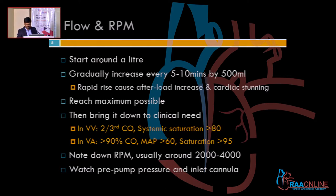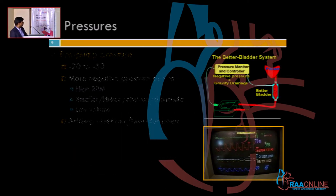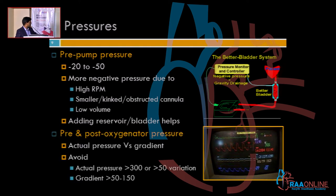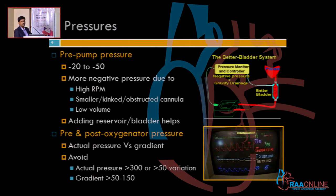Go gradually. Regarding pressures: you monitor pre-pump pressure, post-oxygenator pressure, and delta pressures. The pre-pump pressure should be slightly negative — around minus 20 to minus 30. Once it crosses minus 50, you are applying too much negative pressure, which can cause vein collapse and hemolysis. If it is too negative, check whether RPM is too high, cannulas are too small, kinked, or partially obstructed.